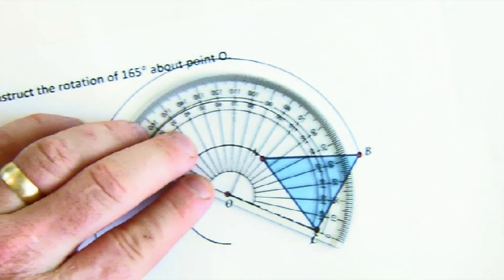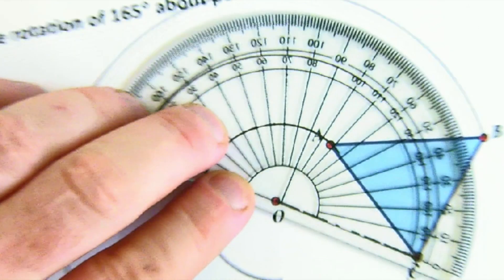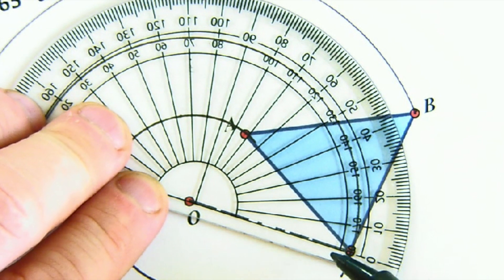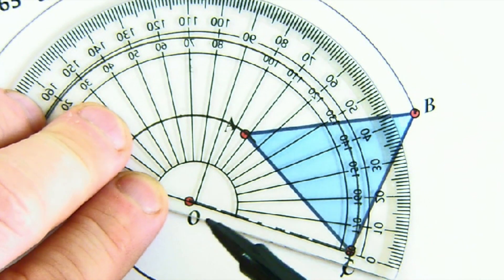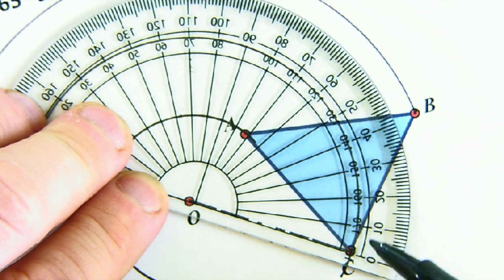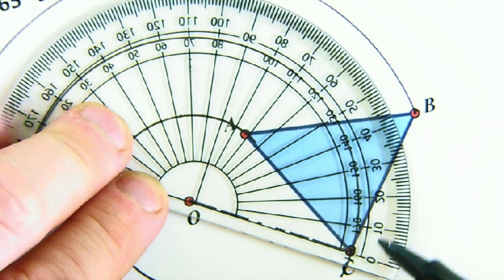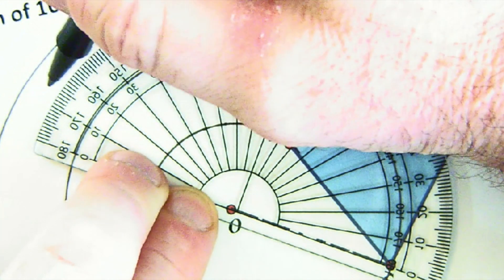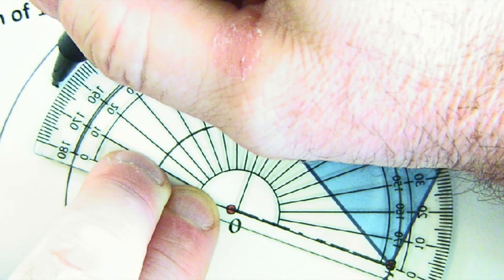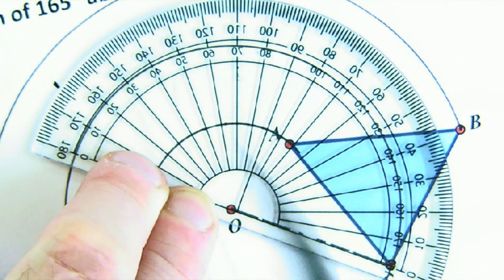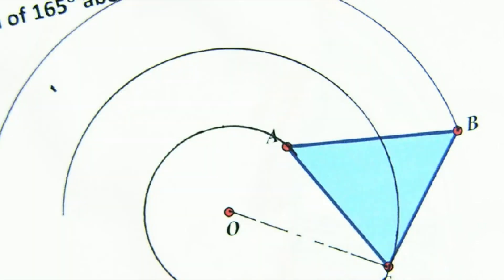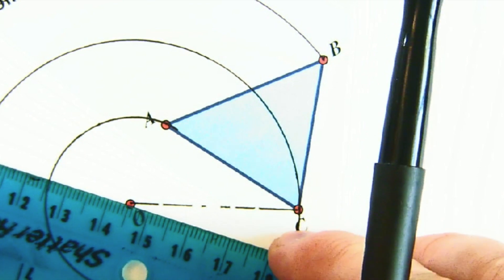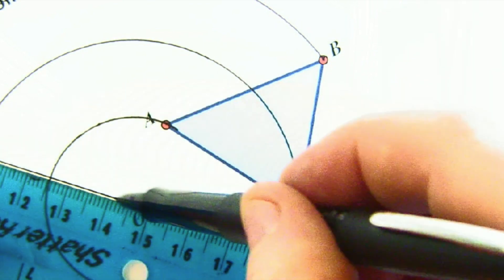Now let's learn how to read a protractor a little bit here. What I want you to know is sometimes the zero's on the inside, sometimes the zero's on the outside. But if you are on your initial arm and you're creating an angle, always start at zero. Doesn't that make sense? Zero all the way up to 165, way over here somewhere. And what I do is I put a little tick mark where 165 is. Then I lift up and I create the other, the terminal arm of the 165 angle.